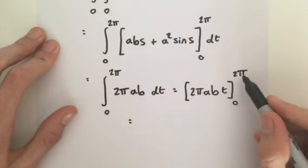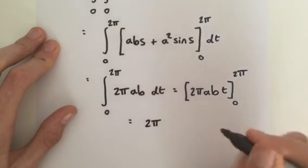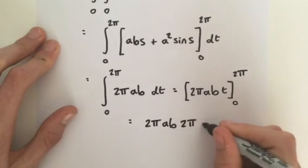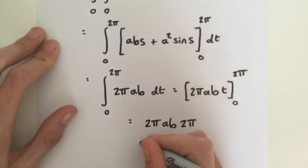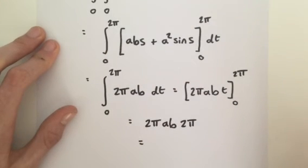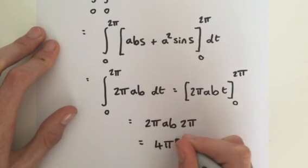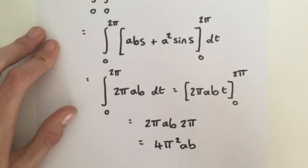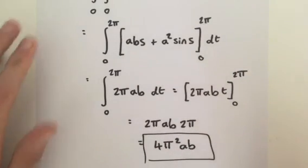So plug in 2π for t, this is equal to 2πab multiplied by 2π, and then we minus, of course, plug in 0 for t, that just gives you a 0. And then finally, this is the formula for the surface area of a donut, or a torus. It is 4π squared ab. There you have it, surface area for a torus using a surface integral.